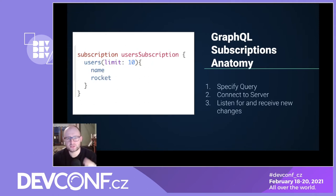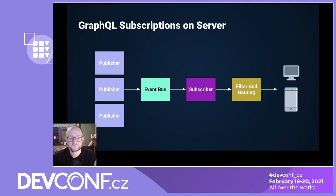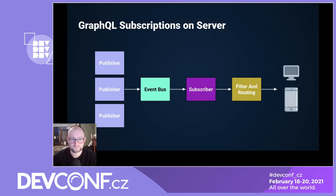Subscriptions on the client are usually acting on specific events. For example, we can act on update, delete, and creation of objects. We're really seeing the subscription query on the client. Let's just talk about how subscriptions are handled on a server.